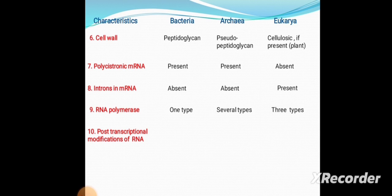Tenth is post-transcriptional modification of RNA. It is absent in Bacteria and also absent in Archaea, but in Eukaryotes it is present. The post-transcriptional modifications in Eukaryotes include capping, polyadenylation, and splicing.